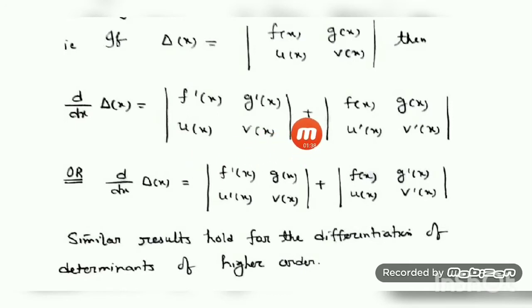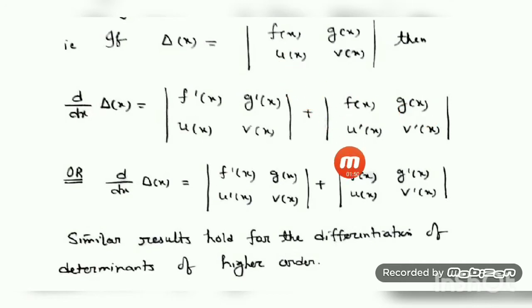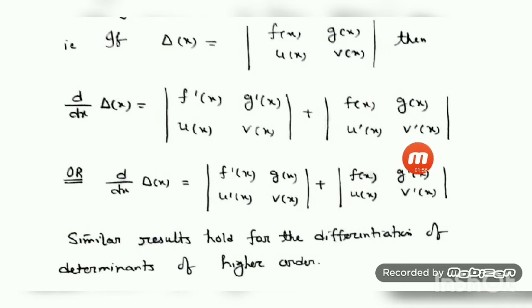Plus, now you keep the first row as it is — f(x), g(x) remains as it is — and take the derivative of the second row: d/dx of u(x) is u'(x), and d/dx of v(x) is v'(x). After that, we know how to find out the value of the determinant and in that way you can find out its value.